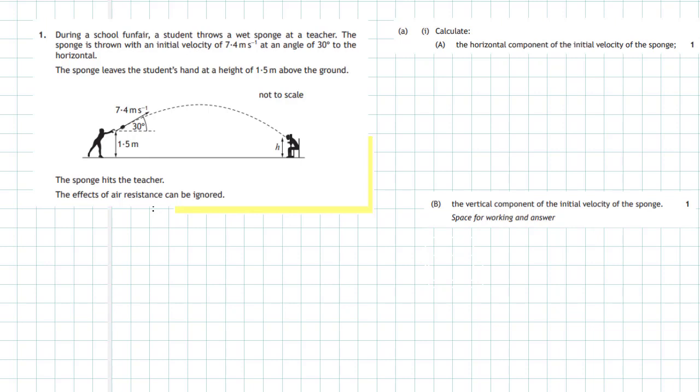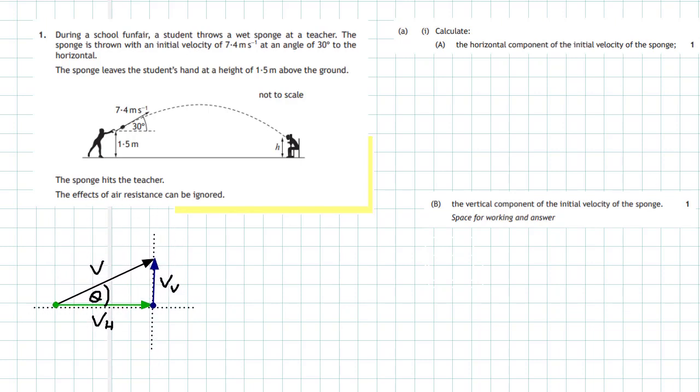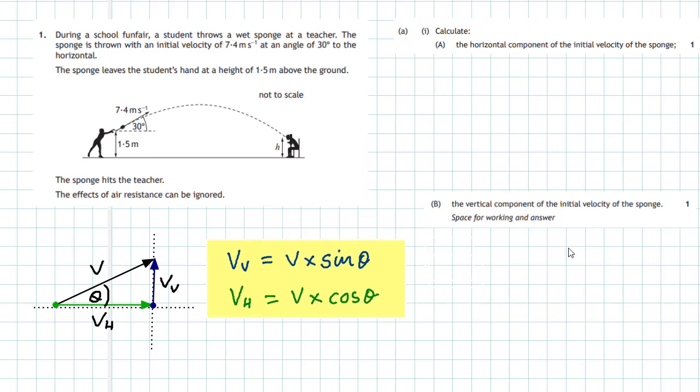Take a while to get used to the diagram, then you can swing into your well-rehearsed autopilot mode. The first thing is to find the horizontal and vertical components of the initial velocity vector. The velocity vector can be broken down into two components: a horizontal component and a vertical component, related by trigonometry. The vertical component is V·sin θ and the horizontal component is V·cos θ, from that triangle.